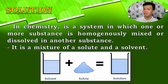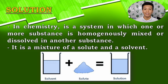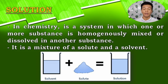What is a solution for you? Is it the mathematical way of solving a problem? Well, it's different in science, and today we will see how it is in chemistry. In chemistry, a solution is a system in which one or more substances are homogeneously mixed into another substance. A solution is a mixture — a homogeneous mixture.